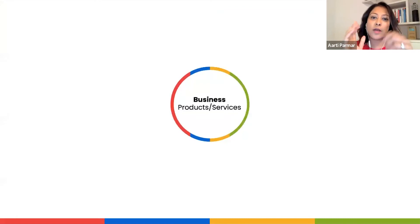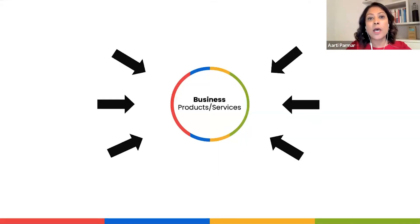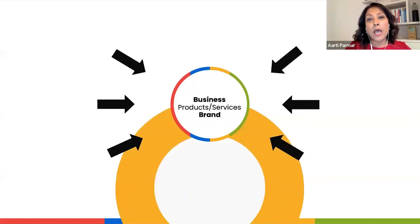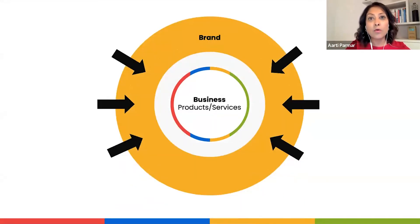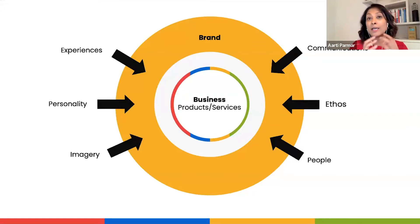The whole point of a business is that it sells products and services — that's why we set up a business. But then we need to think about how do we actually get people to our business, our products and services? That comes from forming an identity for your business, and that identity is called a brand. A brand creates communications, has an ethos, has people that represent it, imagery, a personality, and delivers various kinds of experiences.